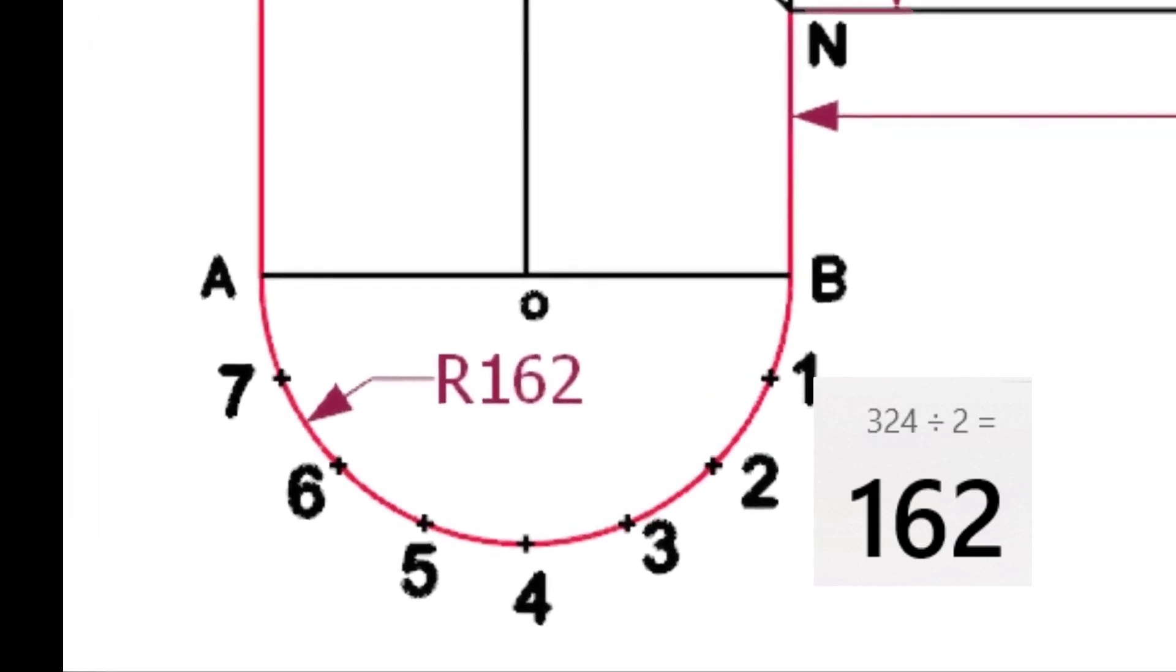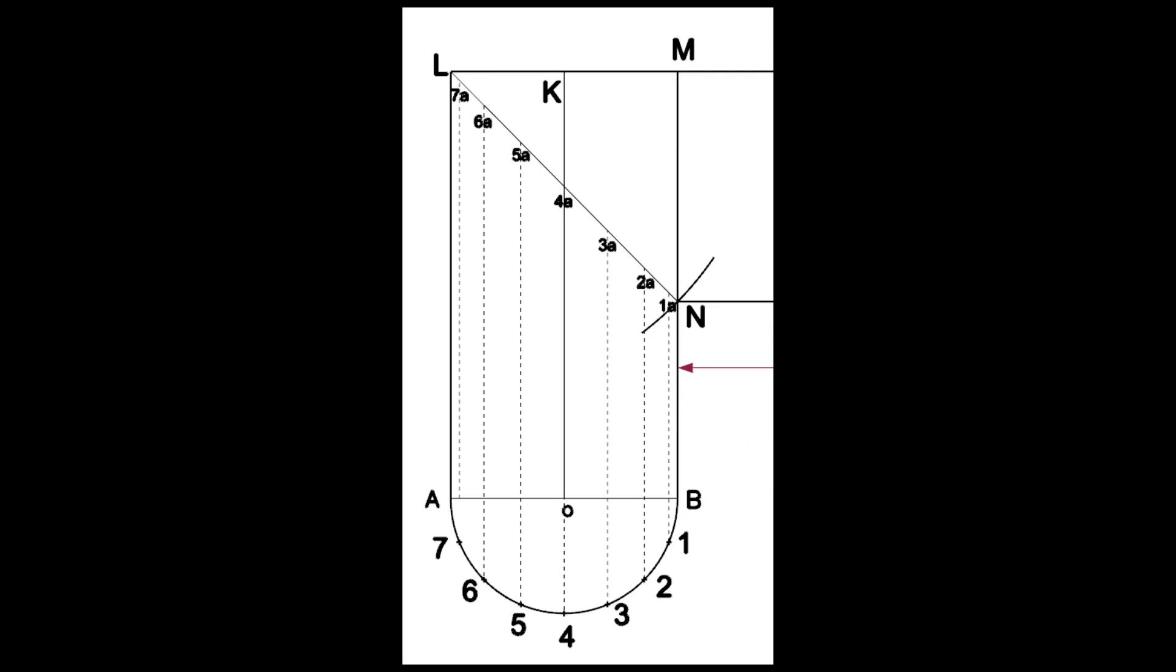Draw a half circle centering O and divide the circumference into eight equal parts. Draw lines 77A, 66A, etc., intersecting the line LN.